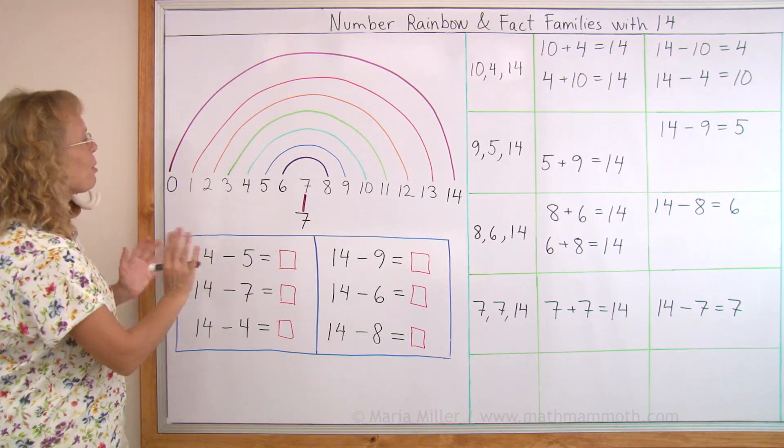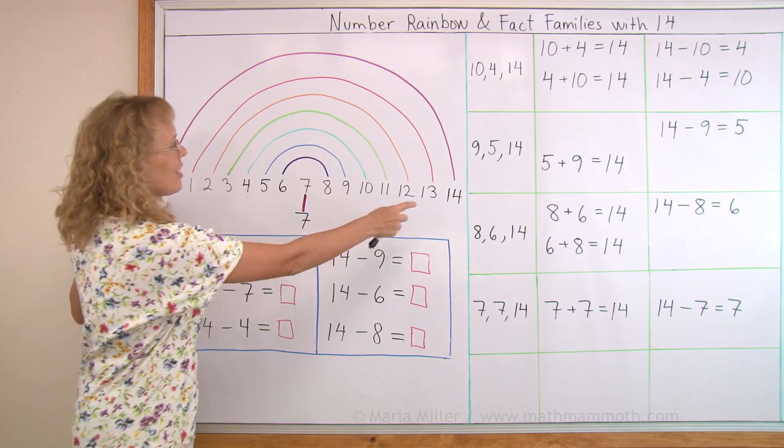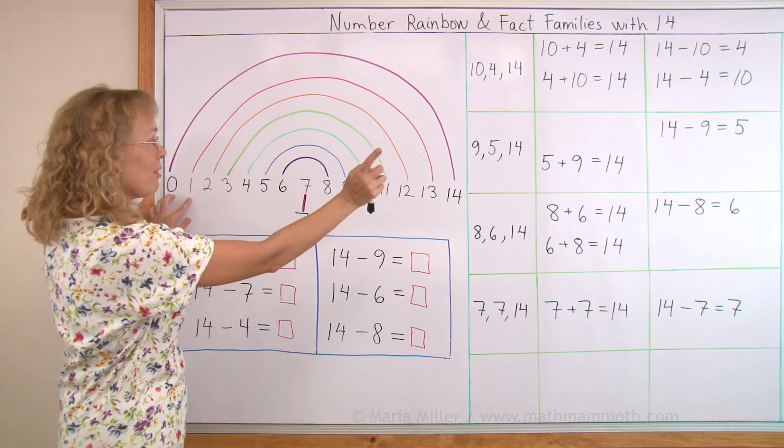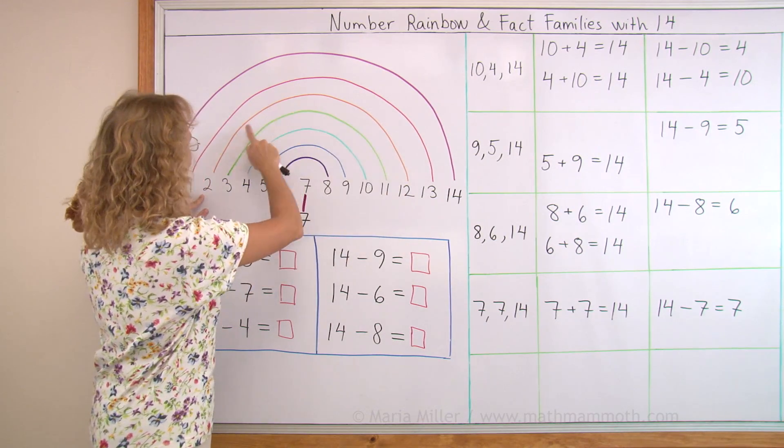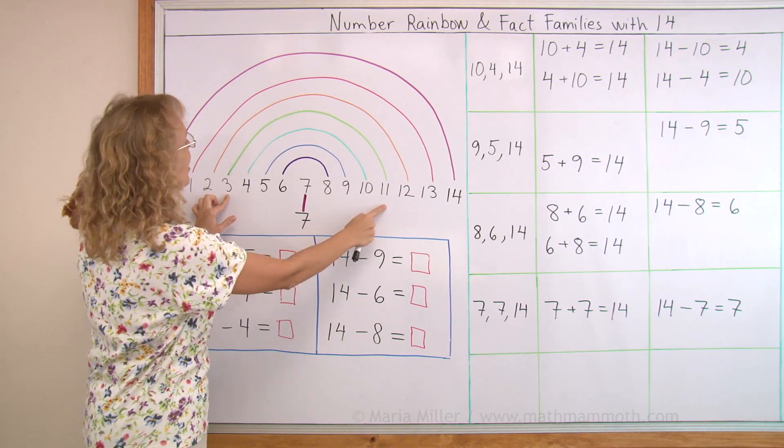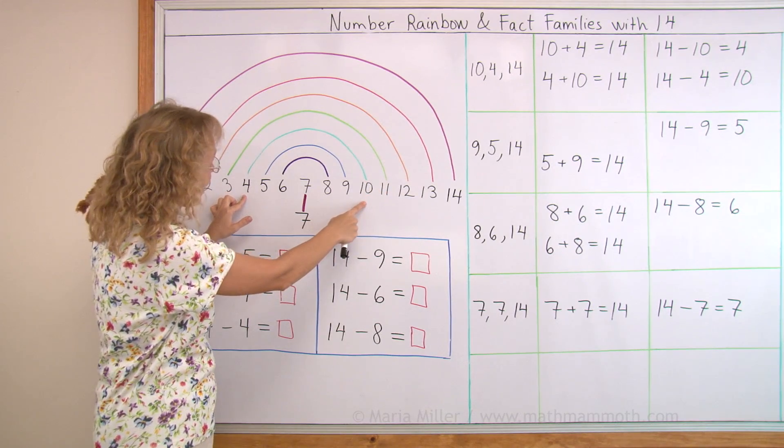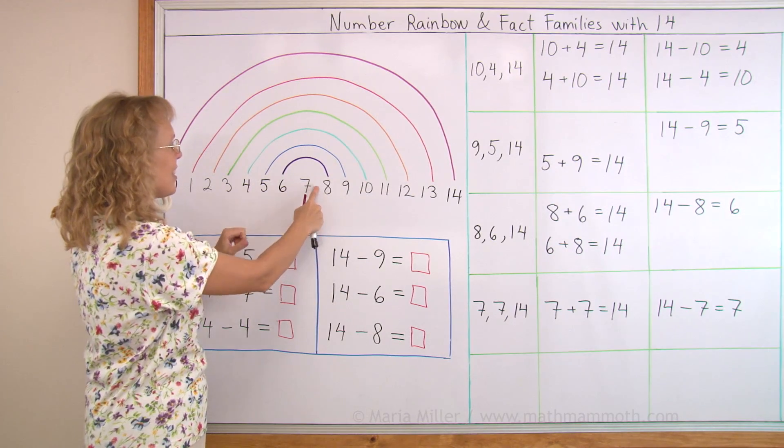Here's the number rainbow again showing us what numbers add up to 14, like 0 and 14, then 1 and 13, 2 plus 12 makes 14, then 3 and 11 makes 14, 10 and 4 of course, and then 5 and 9 and 6 and 8 and 7 and 7.